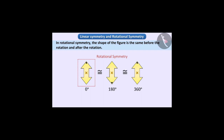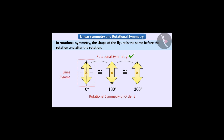Therefore, we can say that this figure has rotational symmetry. Since the shape in a whole circle is twice the same as the initial shape, we can say that the figure has rotational symmetry of order 2. Thus, this figure has both linear symmetry and rotational symmetry.